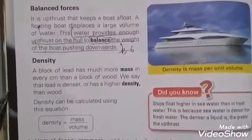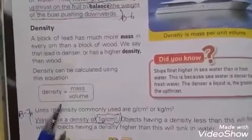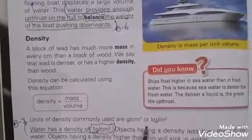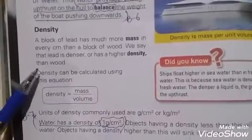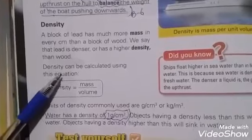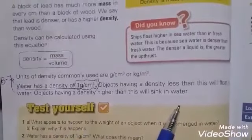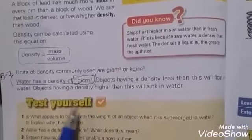Density: We can find out density by using the formula mass over volume. A block of lead has much more mass per cubic centimeter than a block of wood. Lead is more dense, so it has higher density than wood. Water has a density of 1 gram per cubic centimeter. Objects that have less density than this will float on water, and objects with more density will sink in water.